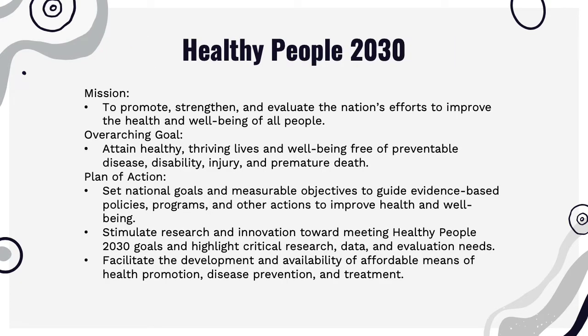For this project, we had to choose a topic from Healthy People 2030. It's an initiative under the Department of Health and Human Services that aims to improve the health and well-being of the public. The overarching goal is to attain healthy, thriving lives and well-being free of preventable disease, disability, injury, and premature death. The plan of action involves setting national goals and measurable objectives, implementing evidence-based policies and programs, and stimulating research to facilitate the development and availability of affordable health promotion, disease prevention, and treatment over the next decade.